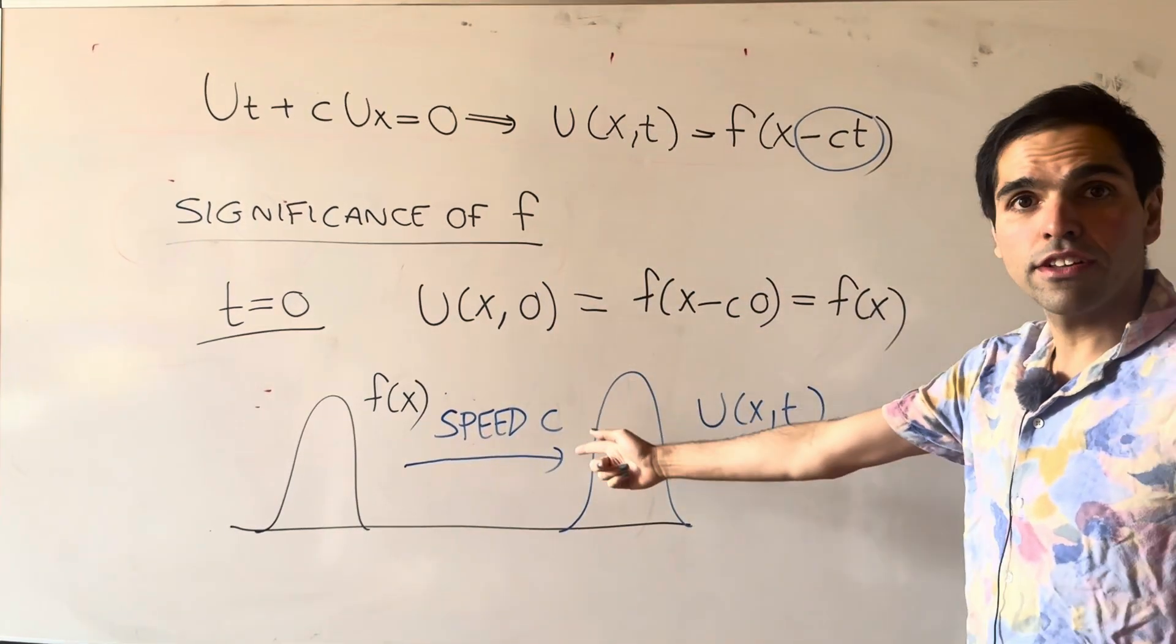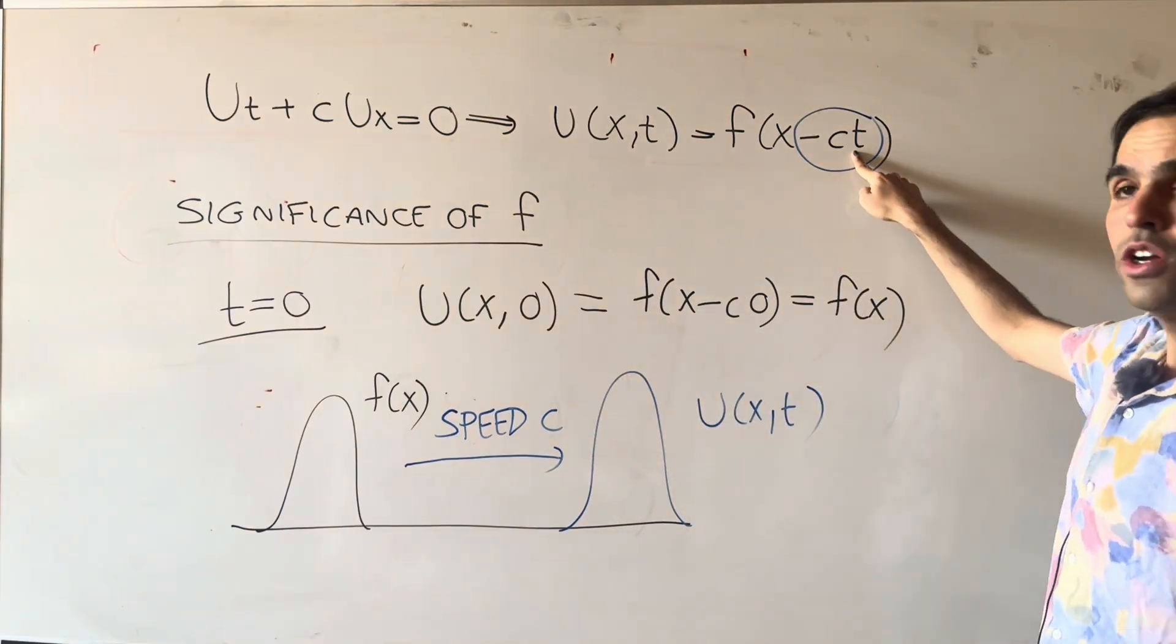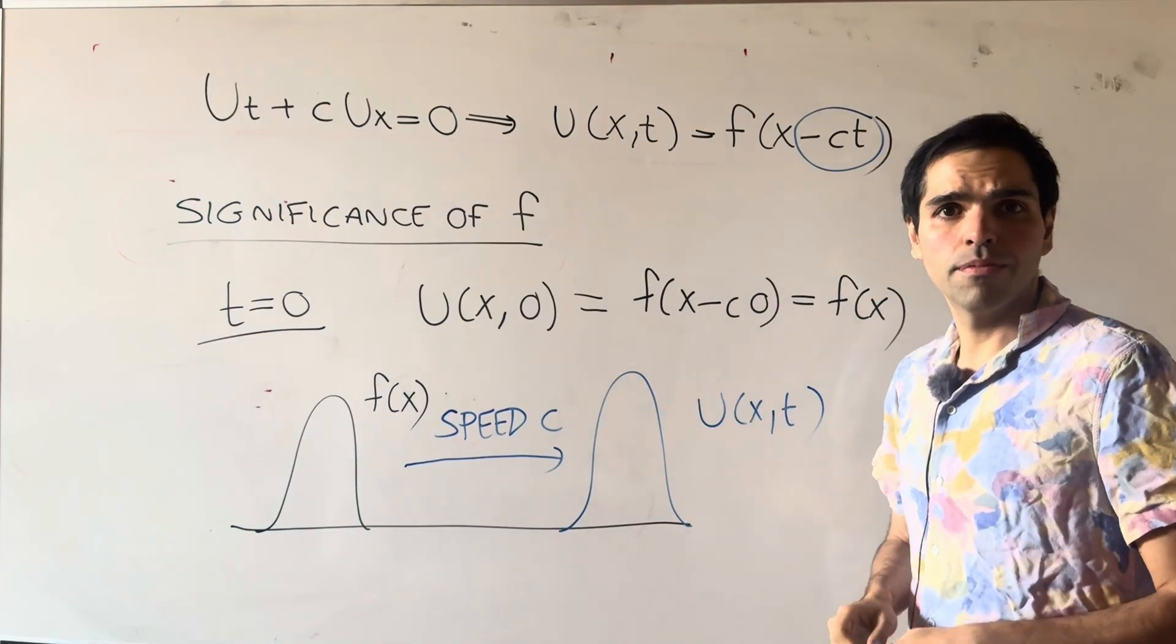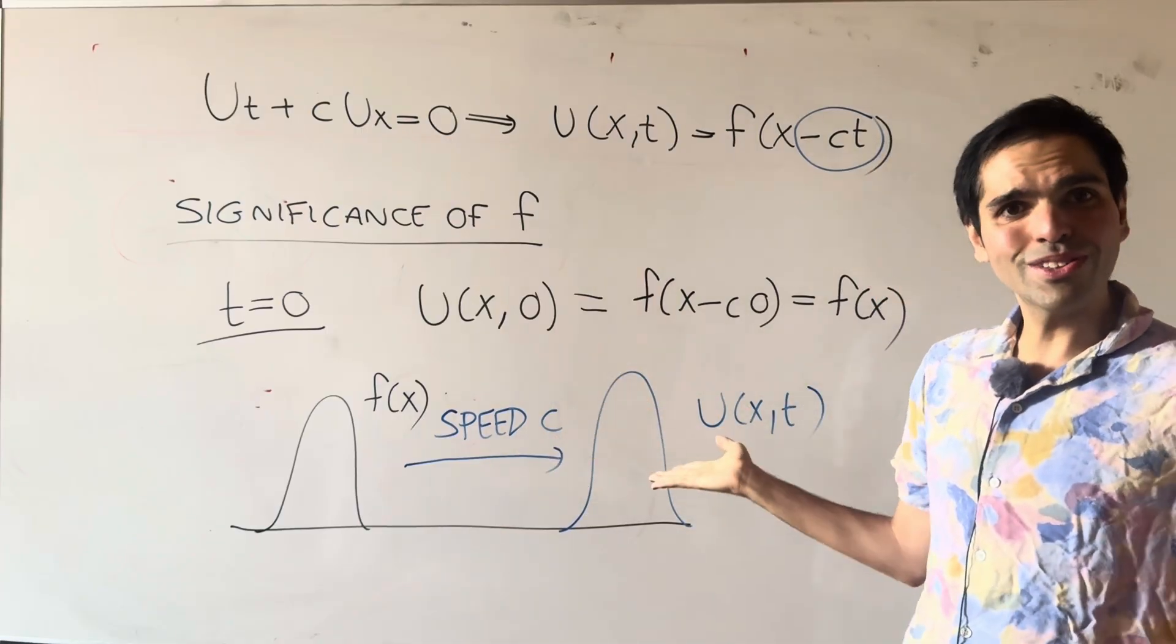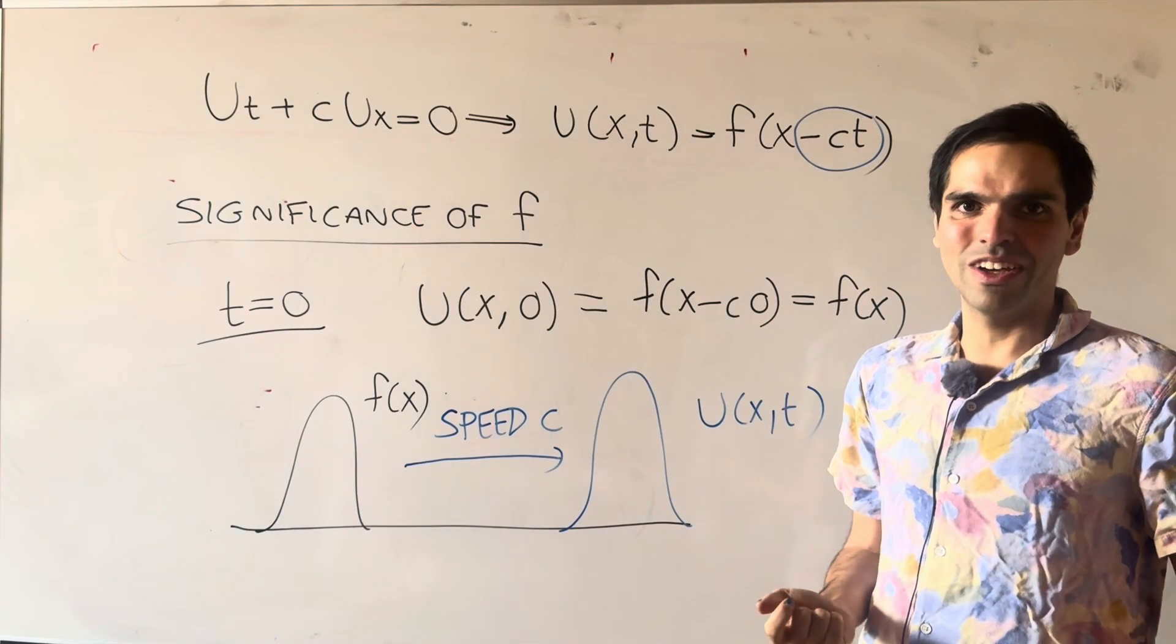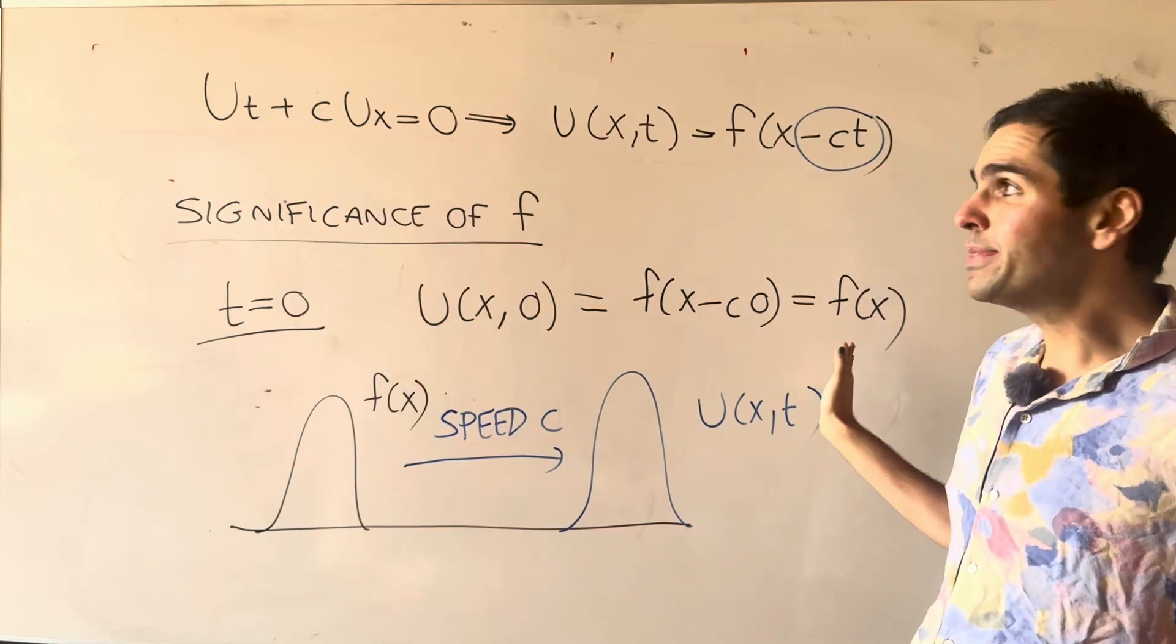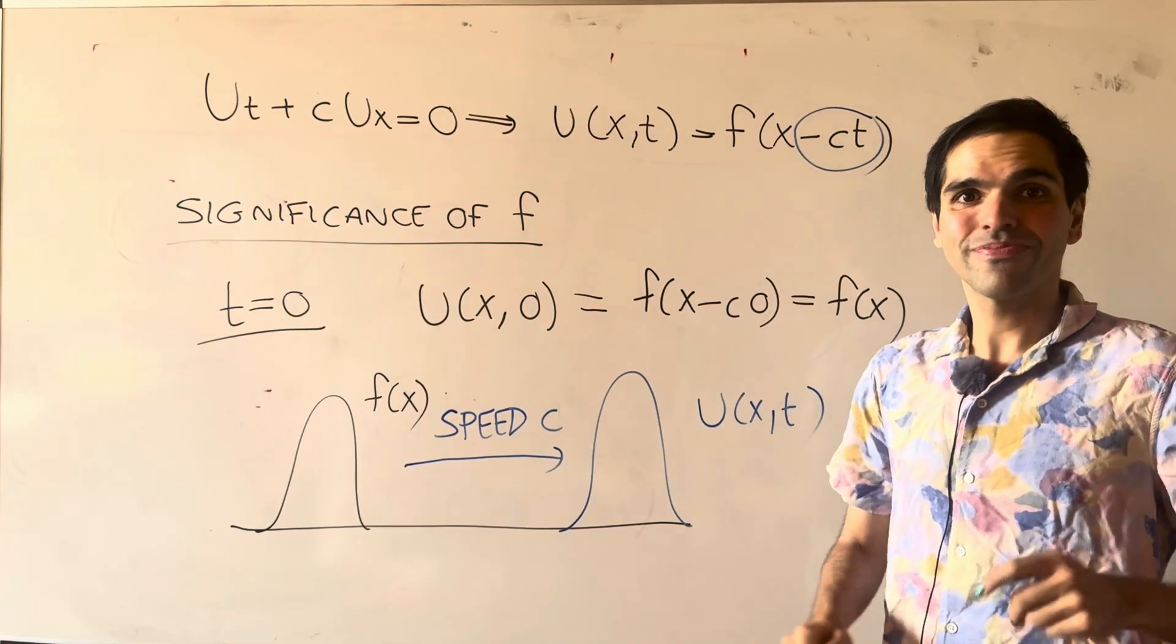Because, for instance, if the speed is 3 miles per hour and we wait 2 hours, we expect it to be shifted by 6 miles. And so in particular, this is the transport equation. And again, I want to emphasize just how natural it is. So naturally we expect to shift the initial condition at the speed c, and our equation tells us precisely that. How cool is that?